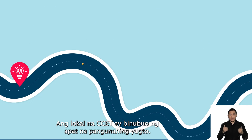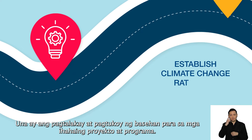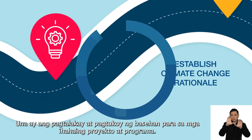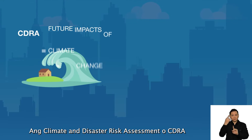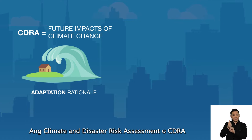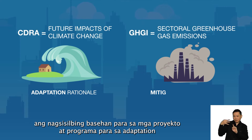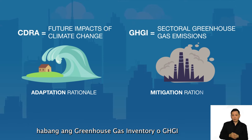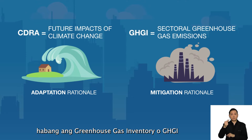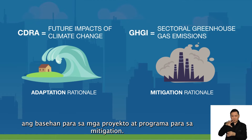The CCE-T is broadly comprised of four main stages. First, in establishing the climate change rationale, the Climate Change and Disaster Risk Assessment, or CEDRA, establishes the adaptation rationale, while the Greenhouse Gas Inventory, or GHGI, establishes the climate mitigation rationale.